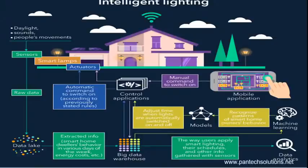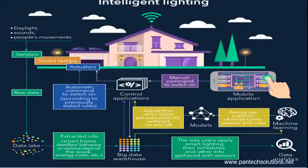Otherwise, you can use your mobile phone and turn on your light systems manually. Based on sensors and actuators — if any object moves around within your place, the light will be turned on automatically. You can also control it from your mobile phone. This is one example of intelligent lighting.